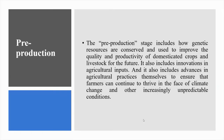The pre-production stage. The sustainability of a food system begins well before a crop is grown or an animal raised. This pre-production stage includes how genetic resources are conserved and used to improve the quality and productivity of domesticated crops and livestock for the future. It also includes innovations in agricultural inputs, such as fertilizer or crop protection products, which can help to boost yields and incomes while preventing further land from being converted for cultivation, and advances in agricultural practices to ensure that farmers can continue to thrive in the face of climate change and other increasingly unpredictable conditions.